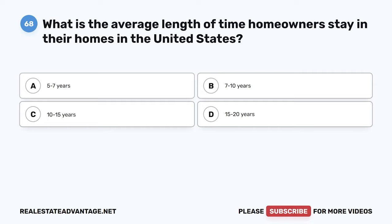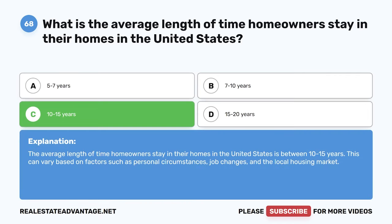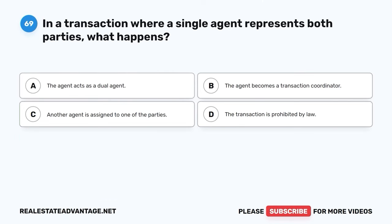Question 68. What is the average length of time homeowners stay in their homes in the United States? A. 5–7 years. B. 7–10 years. C. 10–15 years. D. 15–20 years. The correct answer is C: 10–15 years. The average length of time homeowners stay in their homes in the United States is between 10–15 years. This can vary based on factors such as personal circumstances, job changes, and the local housing market.